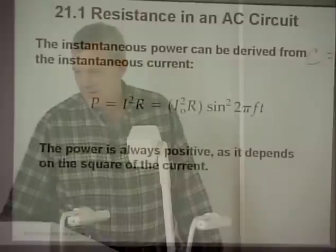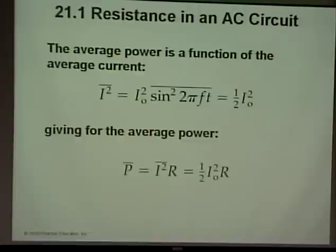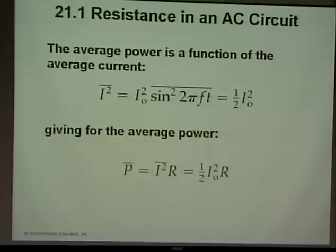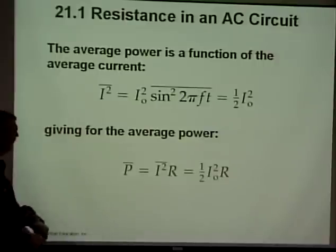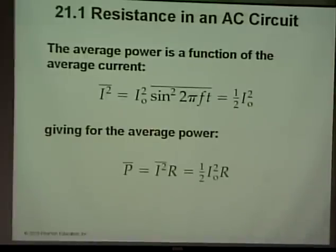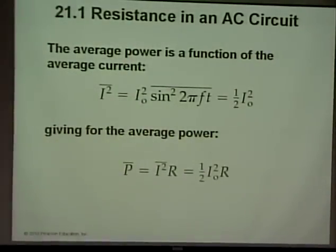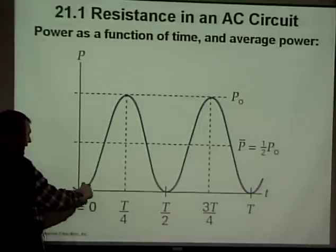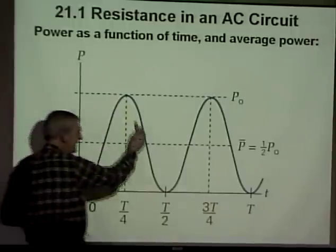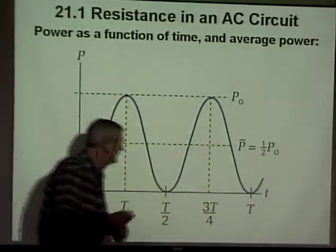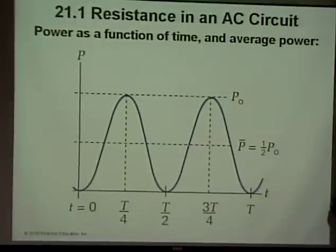The instantaneous power can be expressed using P equals IV — amperage times voltage — because energy in joules equals charge times voltage, and charge divided by time is amperage. For a purely resistive AC circuit, the average power is half the maximum power: P_avg equals one-half times I_naught times V_naught.